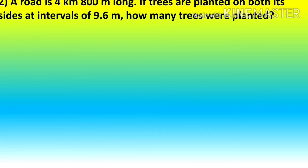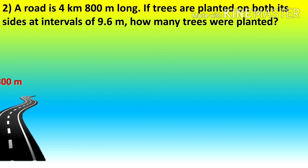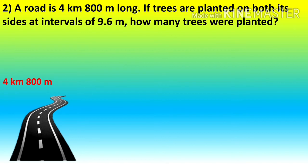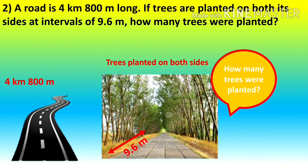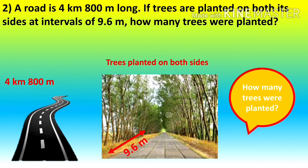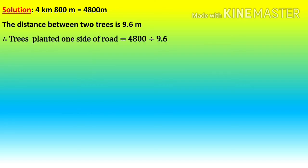After this, we will see question number 2. A road is 4 kilometres 800 metres long. If trees are planted on both sides at an interval of 9.6 metres, how many trees were planted? The length of the road is 4 km 800 m, trees are planted on both sides, and the distance between two trees is 9.6 metres. We need to find how many trees were planted. We will divide: trees planted on one side of the road — we will find 4,800 divided by 9.6.